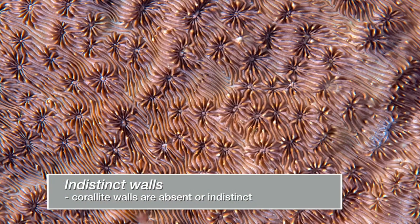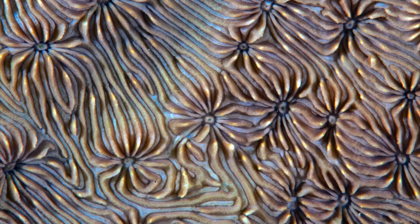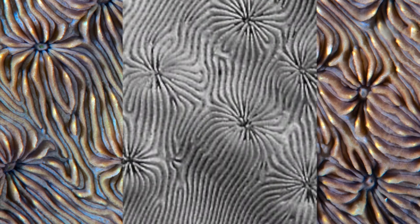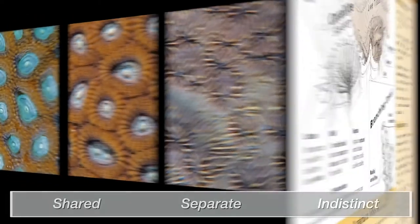Now we have an example of a coral with indistinct walls. Note the ridges that flow uninterrupted between the polyps. The wall structure is indistinct or absent, giving the polyps a visual continuity or flow. With the tissue removed, the coralites show the walls are poorly developed or absent. Being able to recognise shared, separate or indistinct coralite walls is easy, and an important part of the coral finder's approach to separating the coral genera.